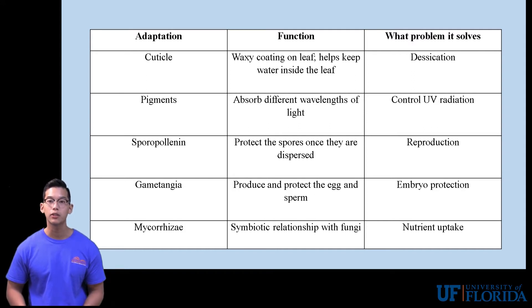Sporopolinin, which protects the spore once it's been dispensed by the plant. Gametangia, which produces and protects the different gametes such as eggs and sperm. And finally, the myocoriza, which is a symbiotic relationship plants have with fungi that helps with nutrient uptake, such as nitrogen. The aforementioned adaptations can be found throughout all the land plants that we will discuss.